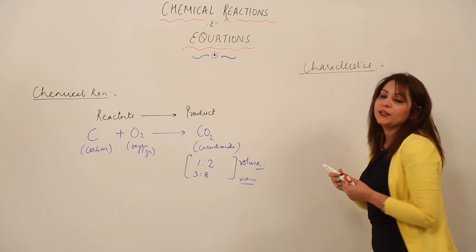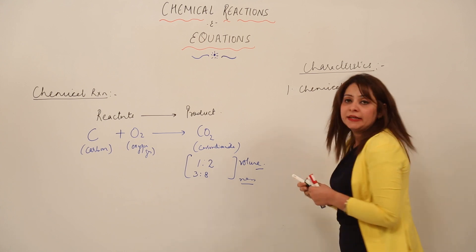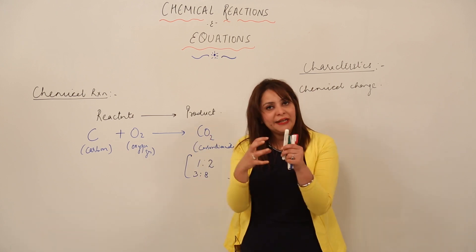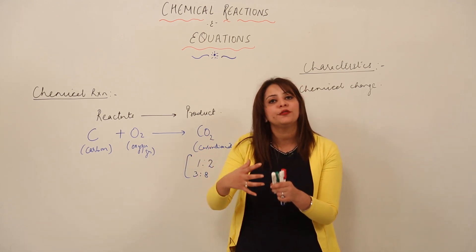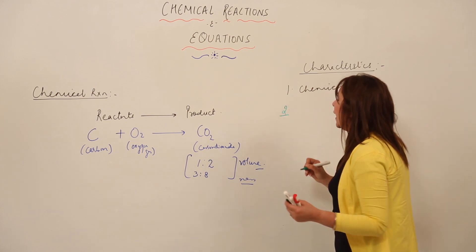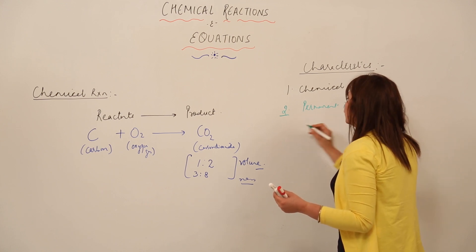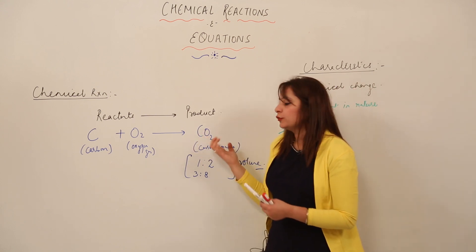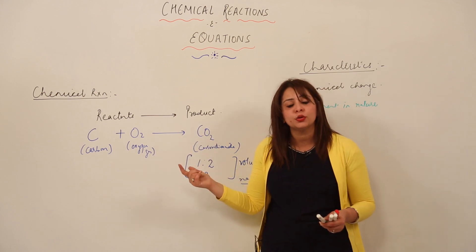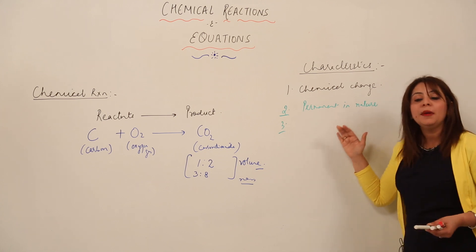Now, what are the characteristics of a chemical reaction? First, it is a chemical change — the reactants undergo a chemical change where old bonds are broken and new bonds are formed. Moreover, this change is permanent in nature and cannot be reversed. For example, CO₂ cannot be converted back into C and O₂ by physical methods at the same conditions of temperature and pressure.